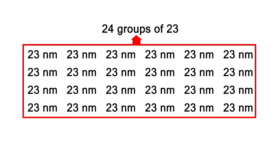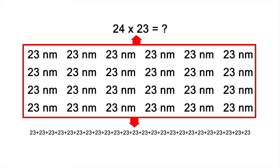We end up with 24 groups of 23. We could use repeated addition to add them up. But a quicker way is to solve the equivalent multiplication problem: 24 times 23. Let's do it!